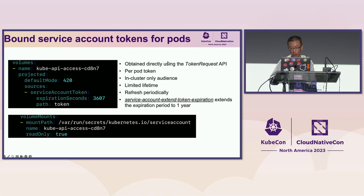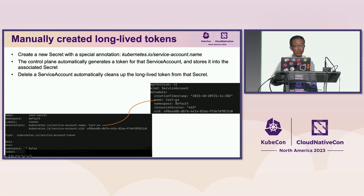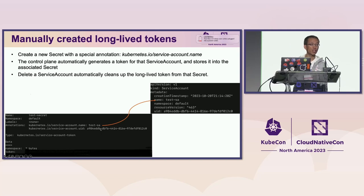After a certain future version, you should switch or change it to enforce short time-limited tokens. As you can see, those are the projected tokens. And as mentioned earlier, you can still create some long-lived tokens via secrets, but now you have to do it manually. It means when you create a service account, it won't automatically generate any tokens or secrets for you. You have to manually create a secret, then add a special annotation referencing the service account, and the control plane will generate a long-lived token for that secret. If you delete the service account, the secret and its tokens will be deleted as well — which is different from the automatic approach.